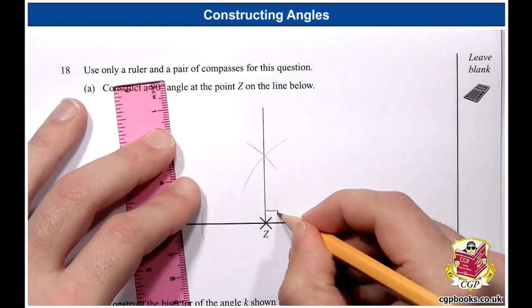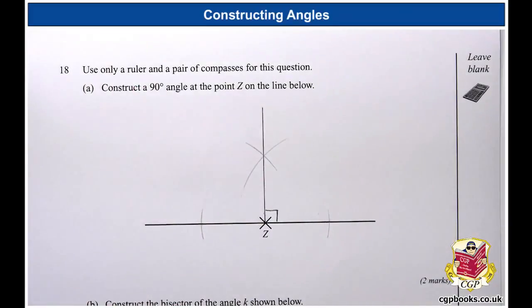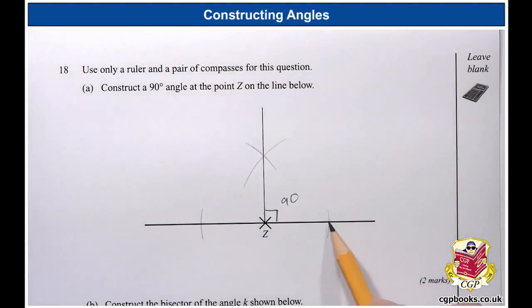So the angle in here, just going to illustrate this with a little right-handed angle like that. This is 90 degrees. So there we go. There's the first part. Don't forget to leave these arcs in. These are your method marks. This is where you get your extra mark from for getting that answer.